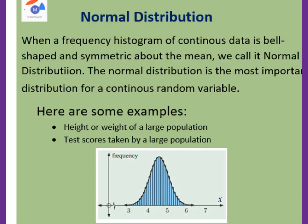This video is about normal distribution. When a frequency histogram of continuous data is bell-shaped and symmetric about the mean, we call it normal distribution. The normal distribution is the most important distribution for a continuous random variable.